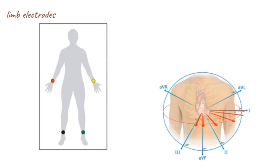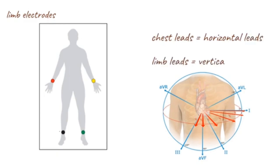The ECG leads are grouped into two electrical planes: the horizontal and vertical planes. The chest leads view the heart from the horizontal plane, while the limb leads view the heart from the vertical plane.